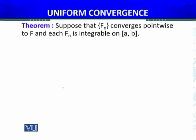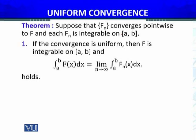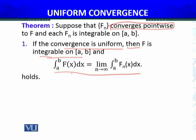Let's restate this theorem. We have a sequence of functions with pointwise convergence to F, and each Fn is integrable on A, B. Then, the first statement is: if the convergence is uniform, then F is integrable on A, B, and furthermore, the interchange of limits holds. This condition is much more relaxed than the previous one.